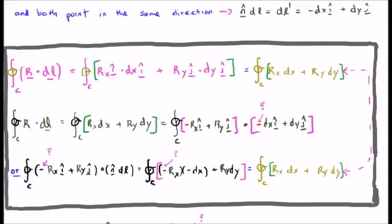We are going to use this in order to manipulate the left-hand side of Green's theorem, the closed line integral of R dot DL. So, R dot DL is R sub X i hat dot DX i hat plus R sub Y j hat dot DY j hat. During the dot product, we get R sub X DX plus R sub Y DY.